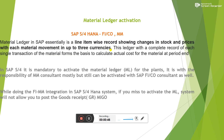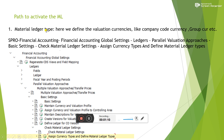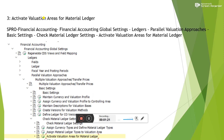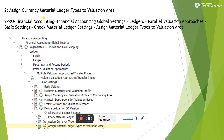The term here is 'valuation area.' Most of the time, valuation area is nothing but your plant. For each and every valuation area or plant, you need to activate the Material Ledger. There are three main steps: first, define the Material Ledger type; second, assign currencies and Material Ledger types to the valuation area; and third, activate the valuation area for Material Ledger.